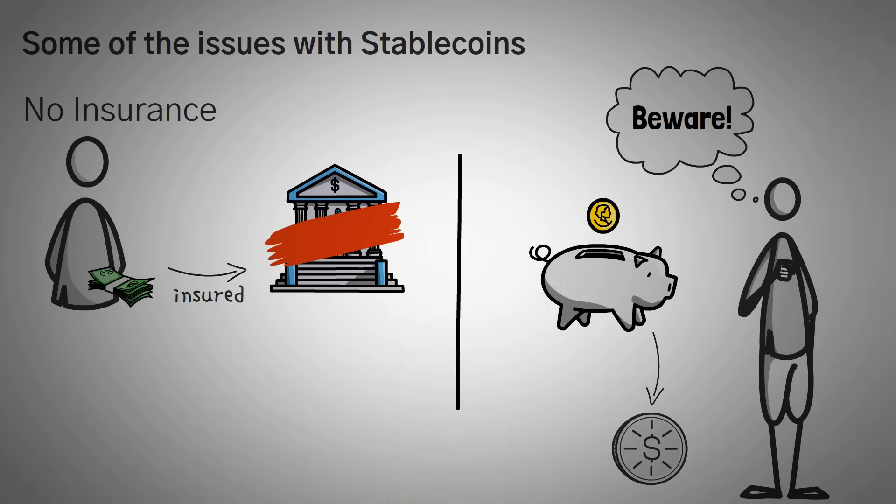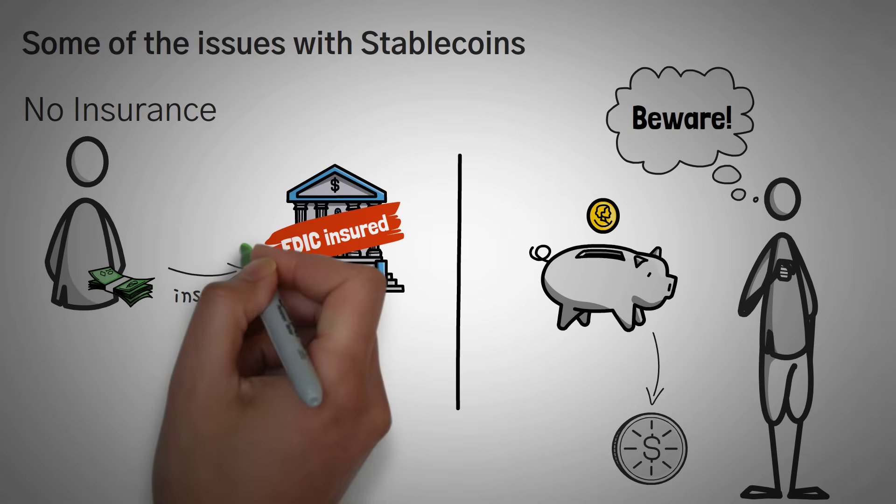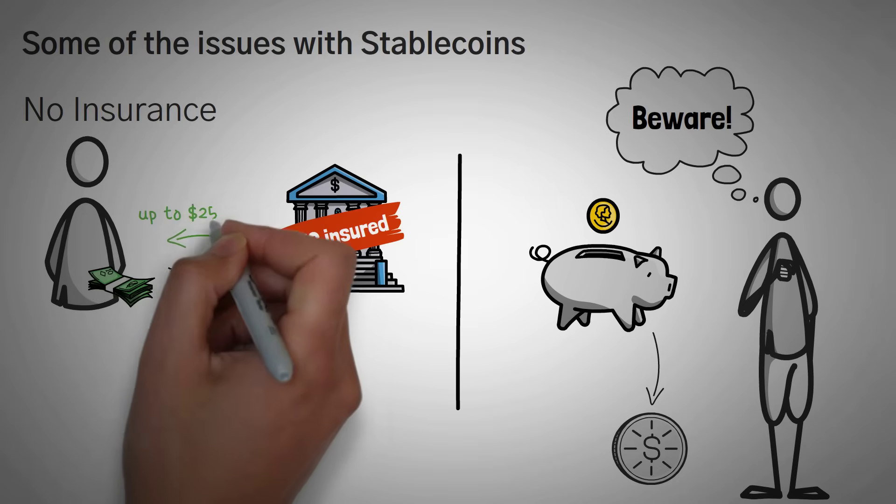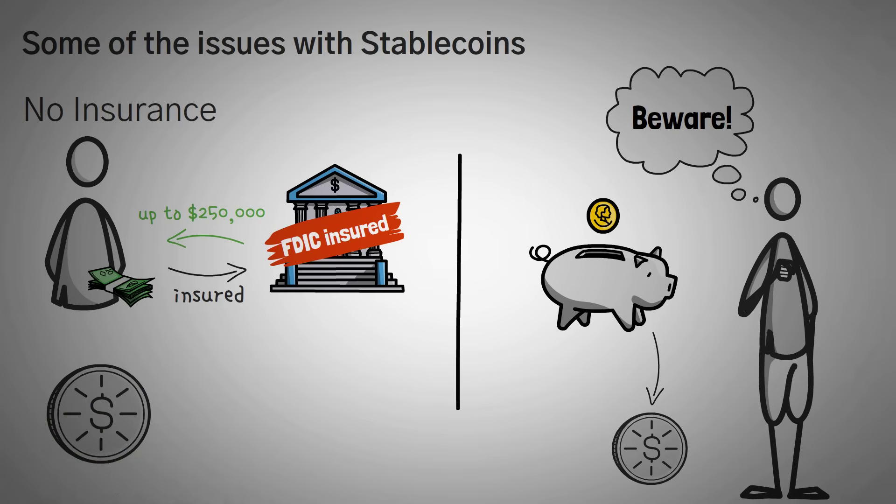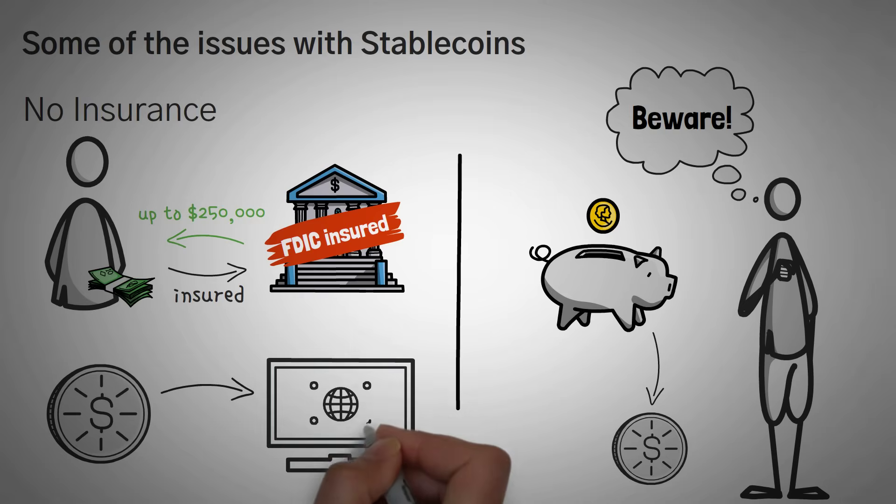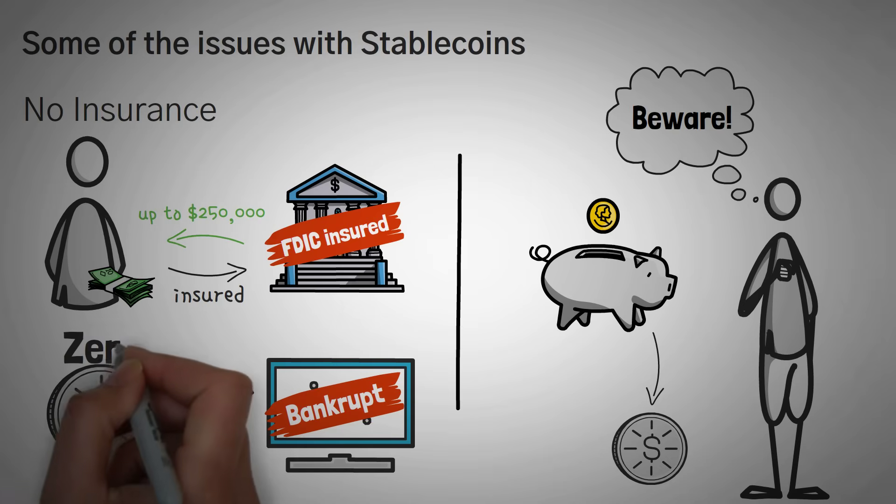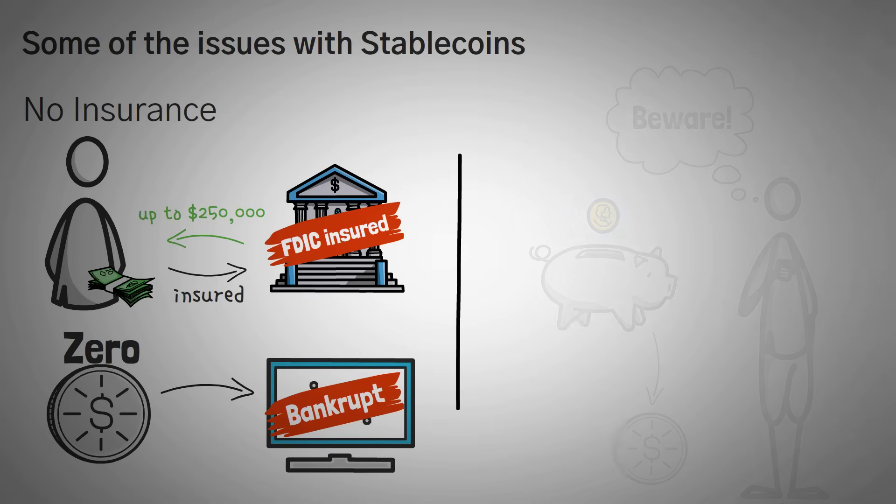Some banks are FDIC insured, meaning they'll repay up to $250,000 worth of money that is stolen or lost from the bank to you. Stablecoins do not have this advantage yet. If a company that started and is operating that stablecoin goes bankrupt, then you'll most likely lose all of your investment and be left empty-handed.